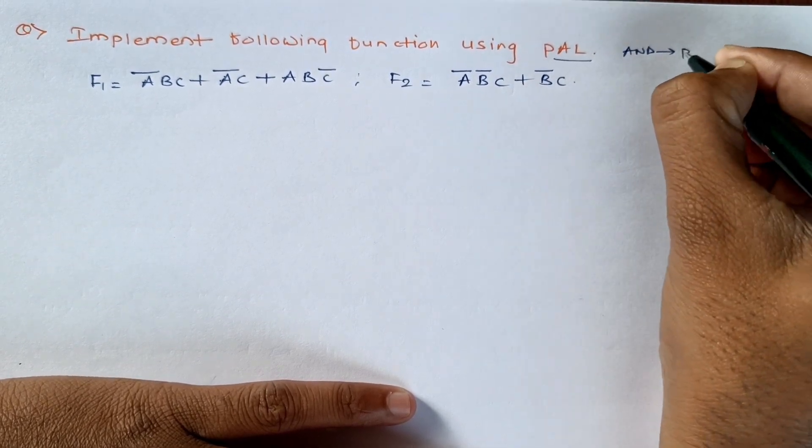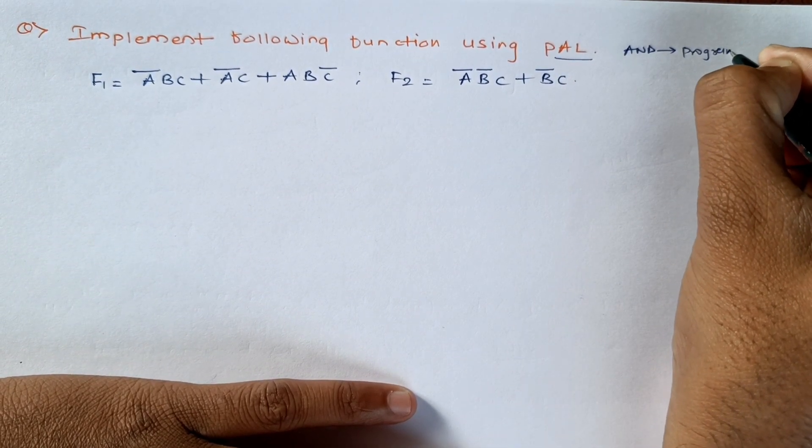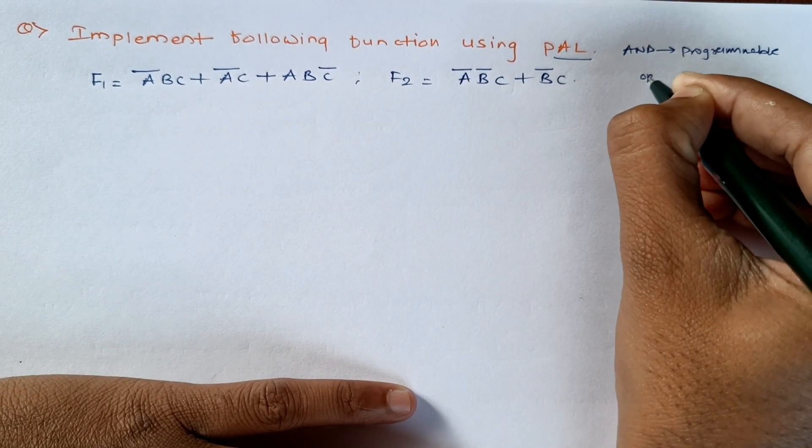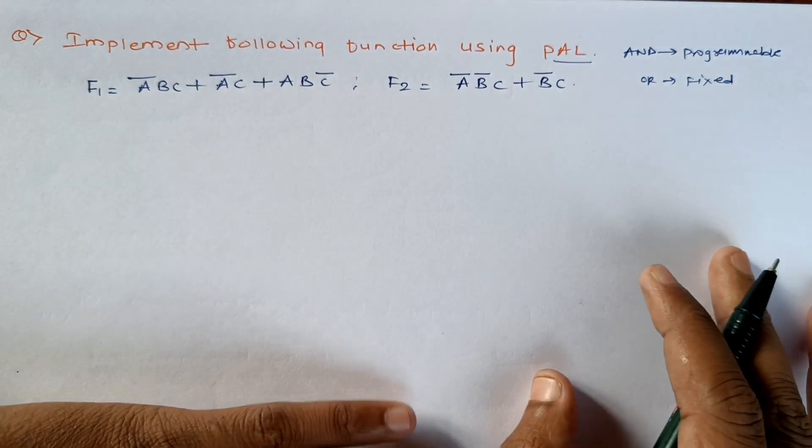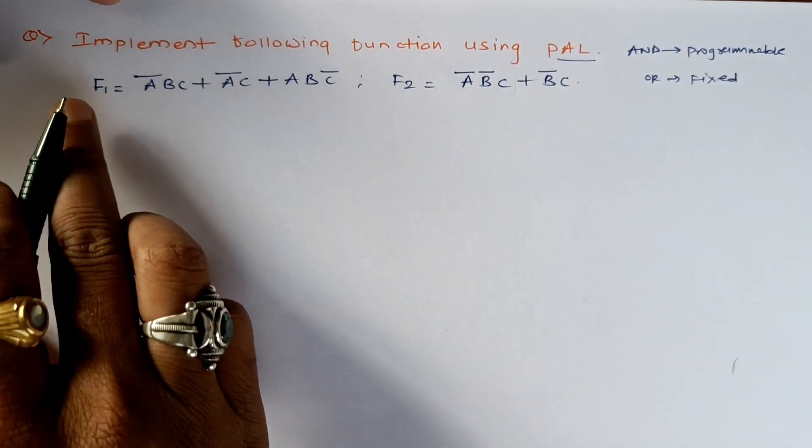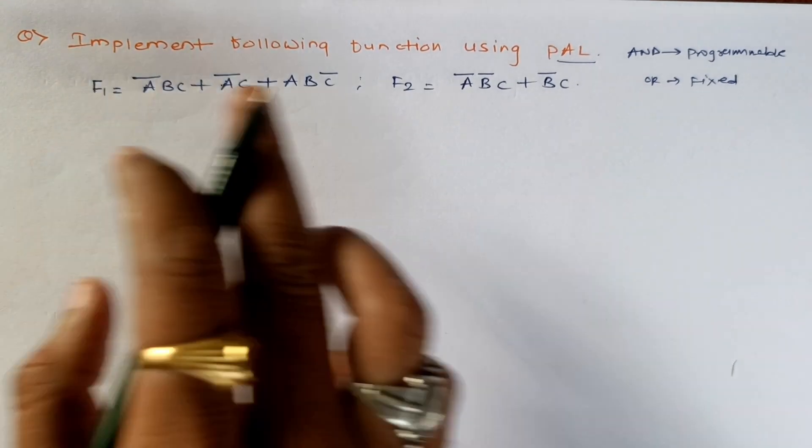So we are going to use a structure with AND gates programmable and OR gates fixed. We have two functions to implement: F1 and F2. All these products, so first of all we will draw the structure here. We have three variables A, B, and C.